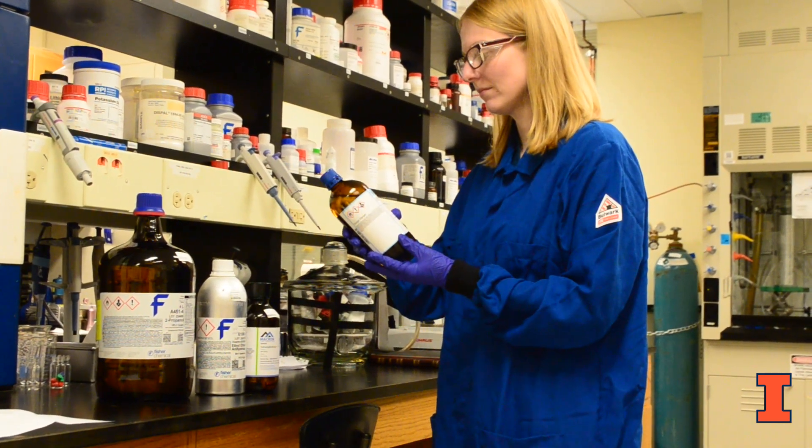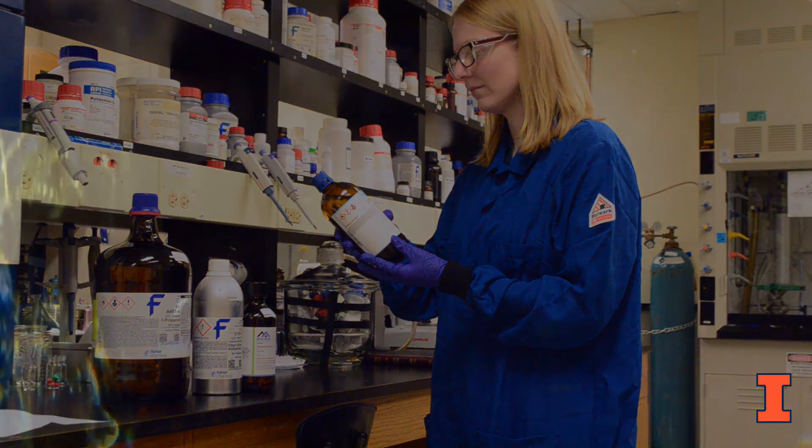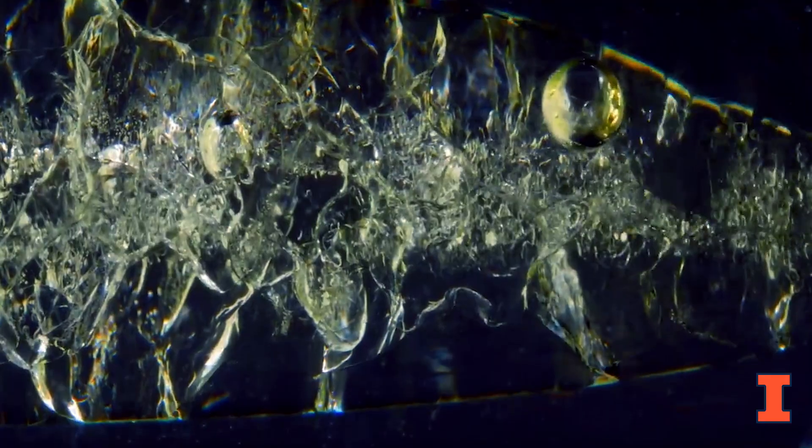Peroxide forming chemicals are a class of compounds that can form shock sensitive explosive peroxide crystals over time when exposed to light and air. Keeping track and testing your peroxide formers should be a part of your chemical management plan.